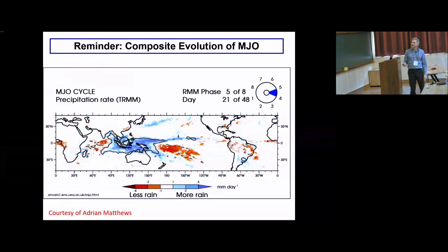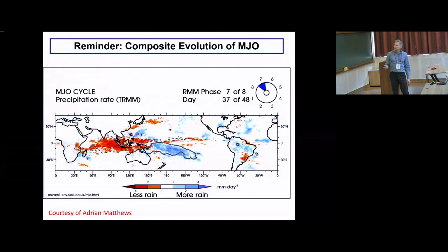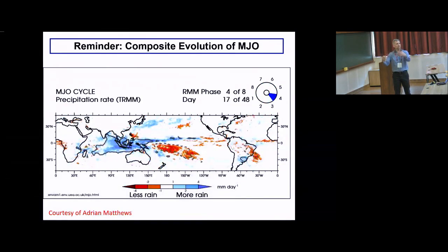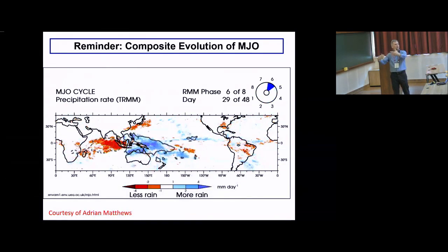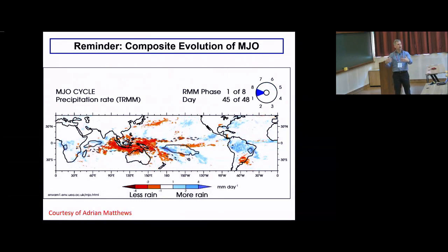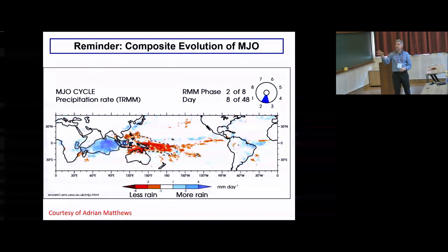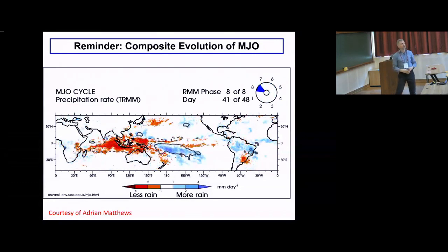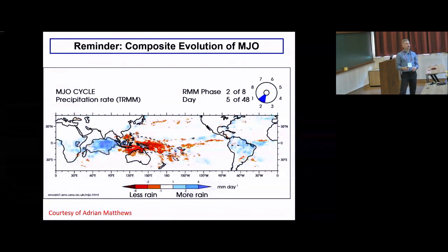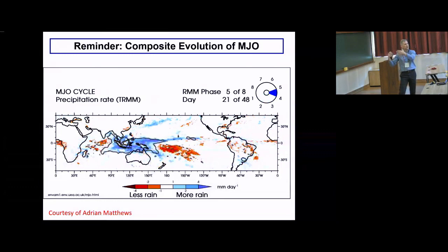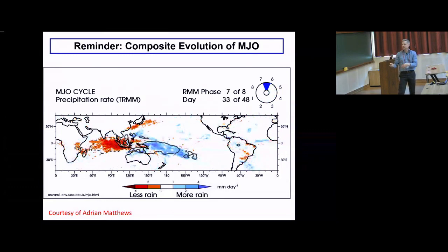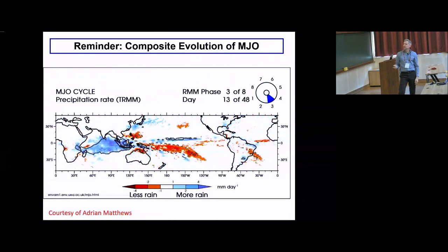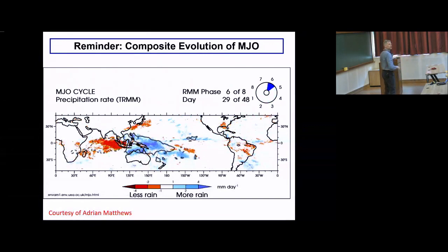Interestingly over the maritime continent, land precipitation tends to start first before the large oceanic envelope comes over, which has sparked a lot of interest in the impact of land on intraseasonal oscillations. There was a paper by Peatman arguing that land acts as a vanguard of precipitation to draw the MJO east over the maritime continent — that's a little more controversial today, but it's one of the motivations for PISTON as well.